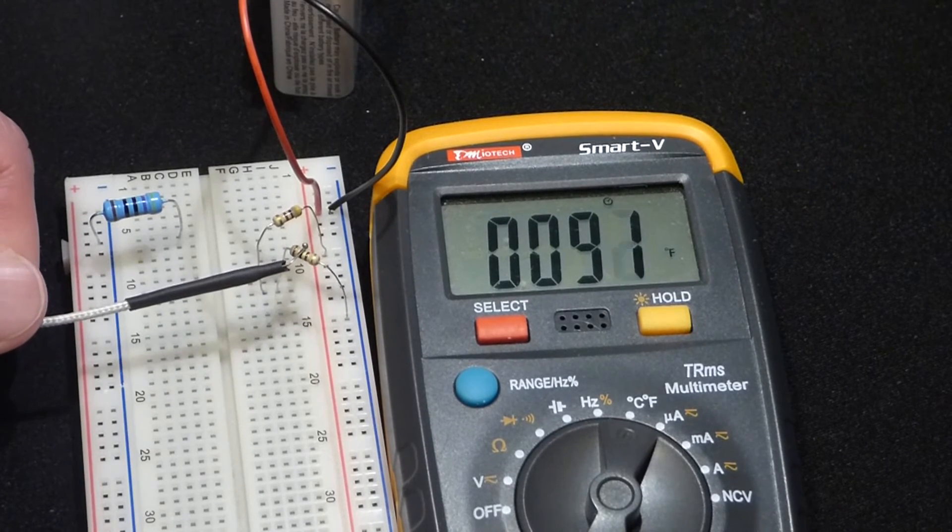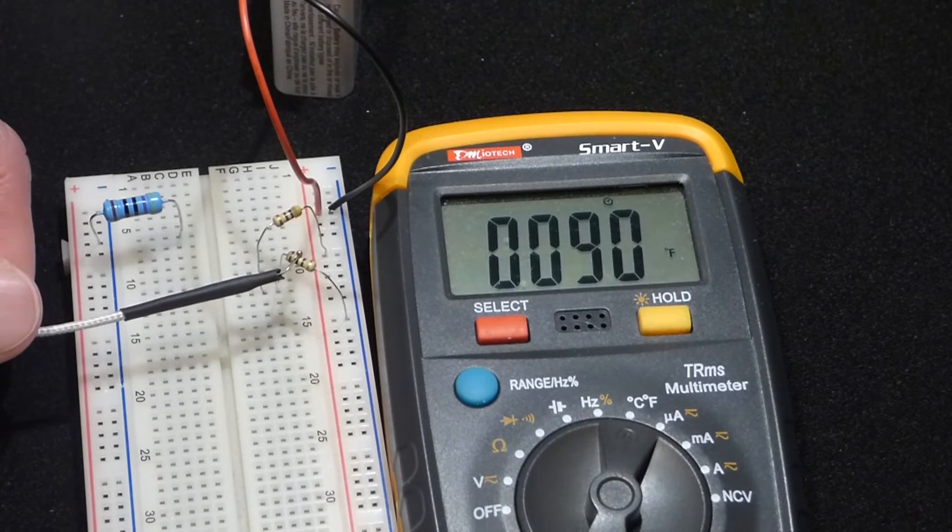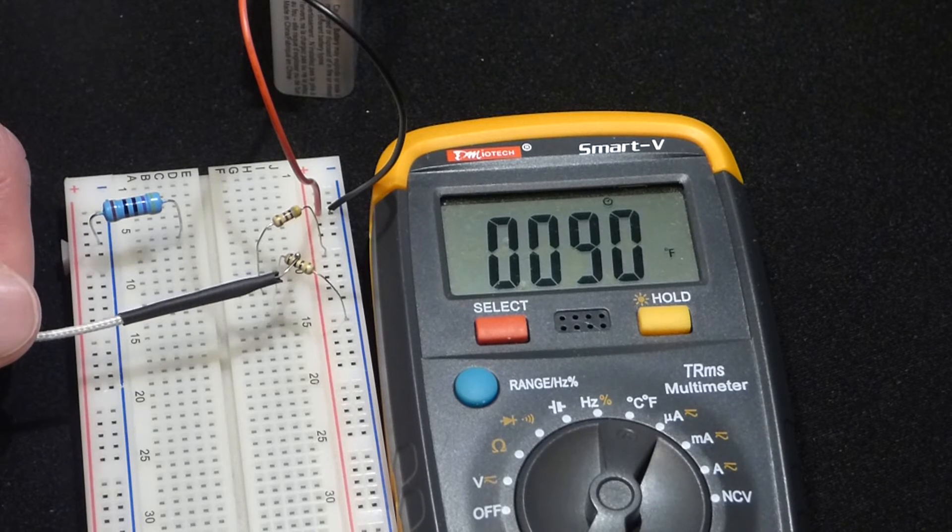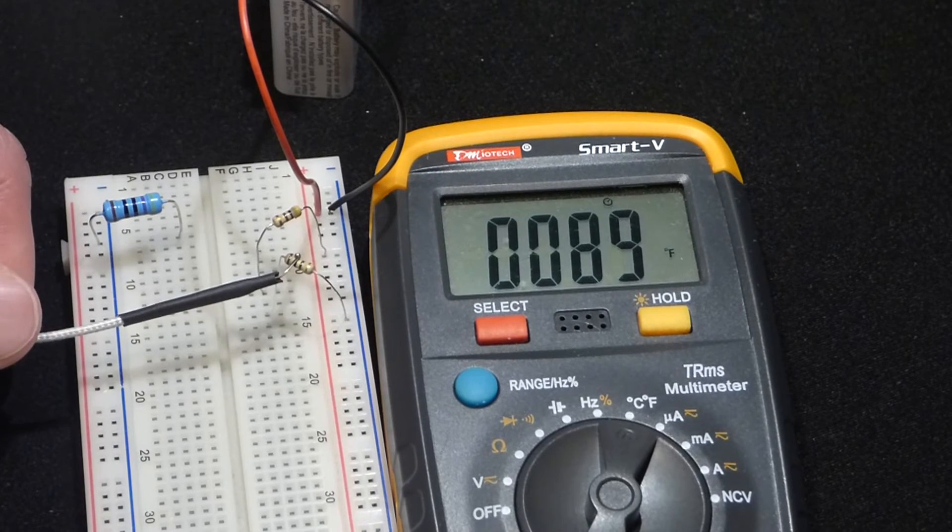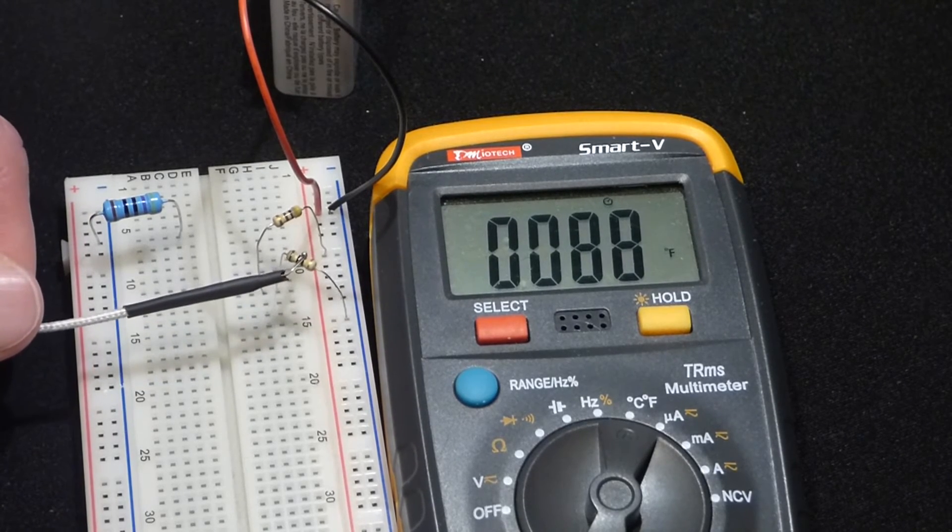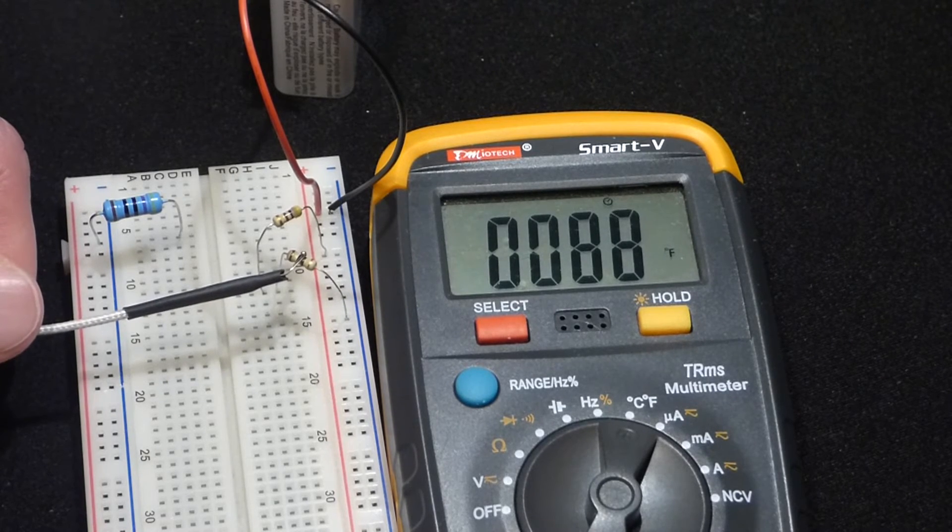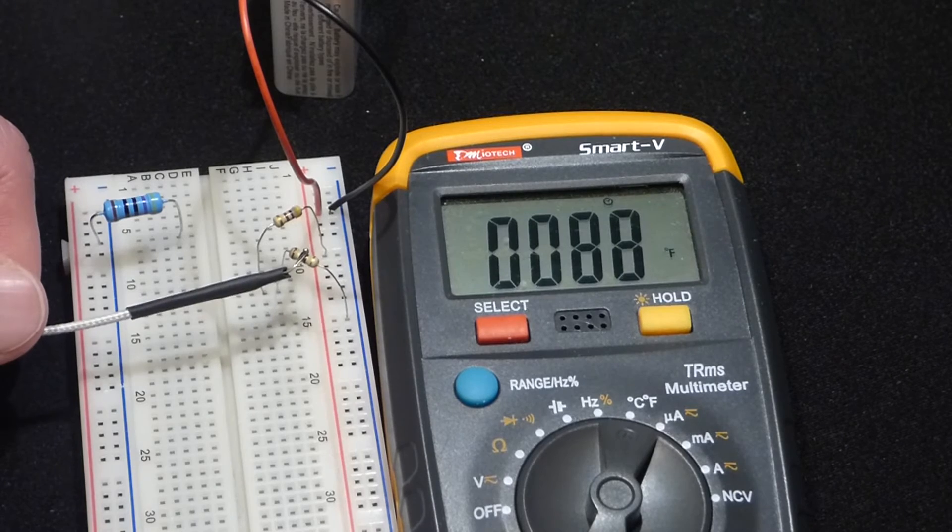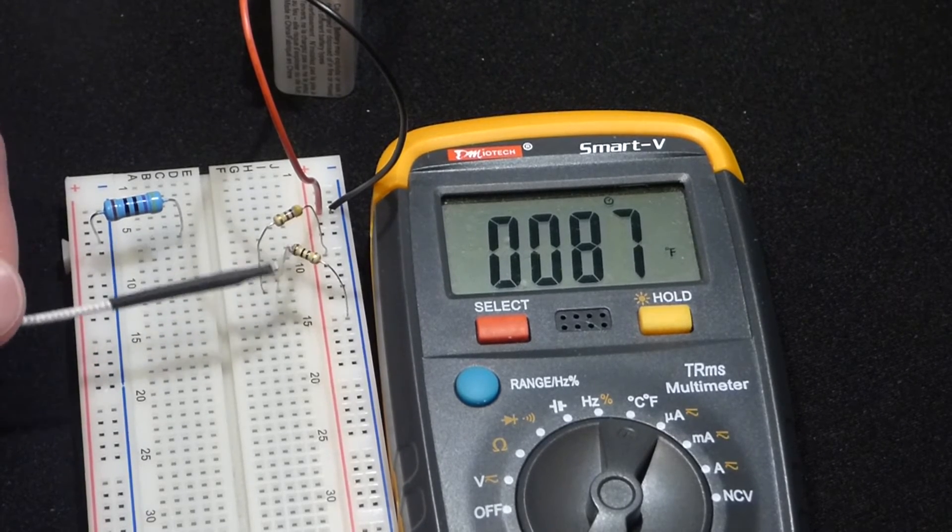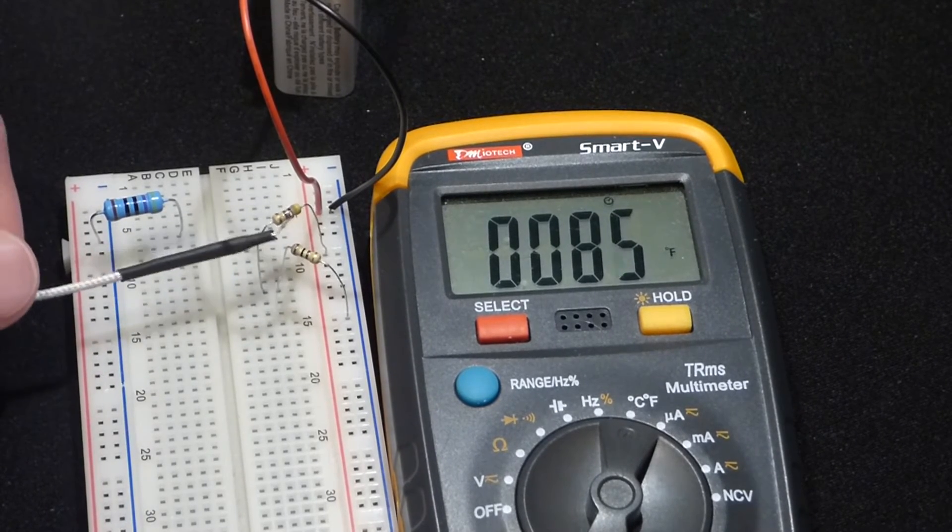Temperature is going down because this resistor is not as hot. It'll take a little bit to stabilize. And it looks like we're about 88 degrees, so quite a bit cooler. This is a 100 ohm resistor.